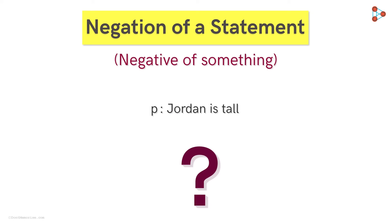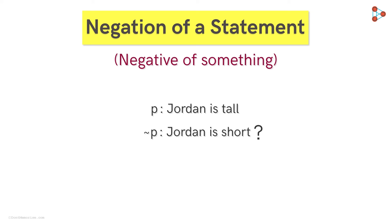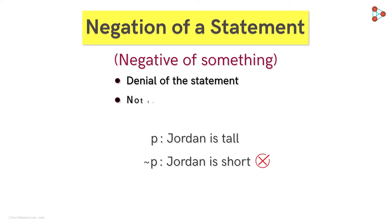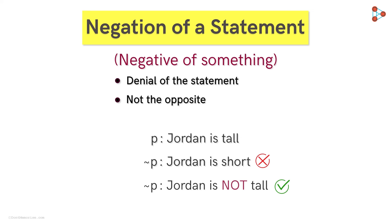Now consider this example. What will be the negation of this statement? Will it be Jordan is short? Not really. Remember that negation is just the negative of a statement — we just deny the statement, but we don't say the opposite of that statement. So the correct answer would be Jordan is not tall.